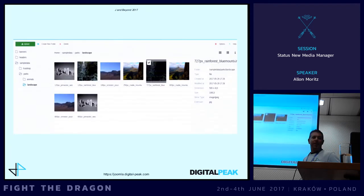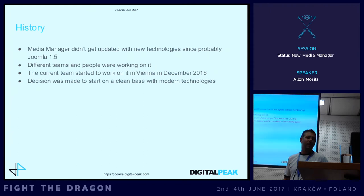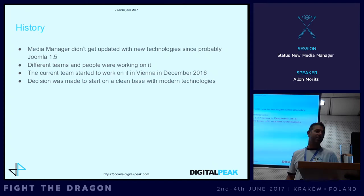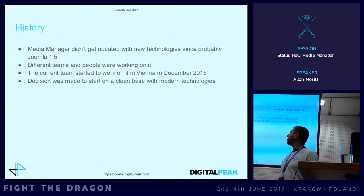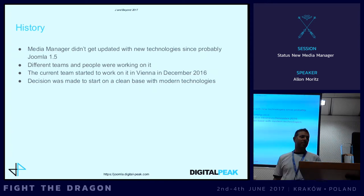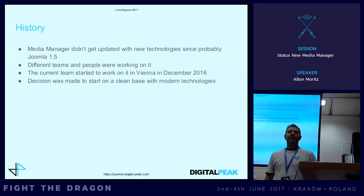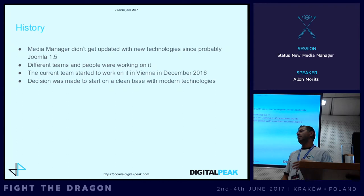The Media Manager as we have it now has more or less the same interface and the same code since Joomla 1.5. The interface has of course been adapted to Joomla releases, but the technology is still stuck since Joomla 1.5. There were different approaches and different teams built to work on it. The current team started in December at a code sprint in Vienna, where we decided to start on a clean base — not just improve the existing one, but use more modern technologies.